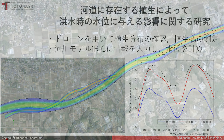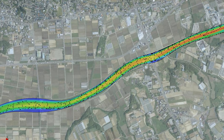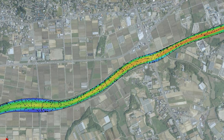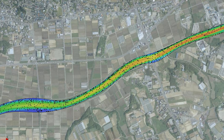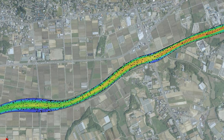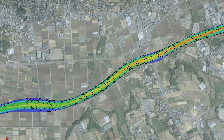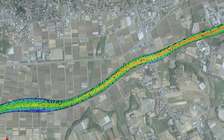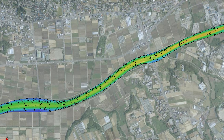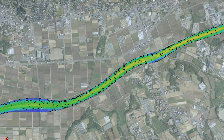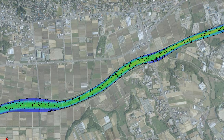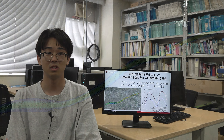河川の課題の中でも、河道植生の管理方法は、植生の繁茂状態が降雨時の水位上昇に直接影響するため、中小河川では限られた予算の中で実施可能な植生伐採方法や許容できる植生高の情報が求められています。そこで、河道に存在する植生が洪水時の水位に与える影響を研究しています。実際に現地へ出向き、ドローンを用いて植生分布の確認や植生高の測定を行い、河川モデルで水位や流動分布を計算して最適な植生管理方法を研究しています。